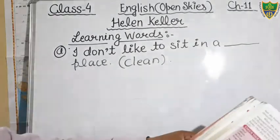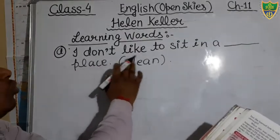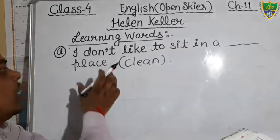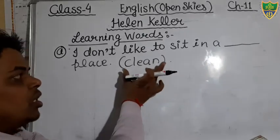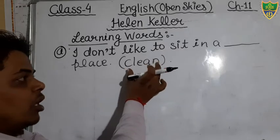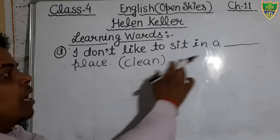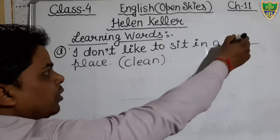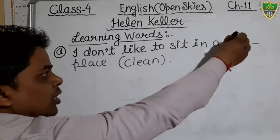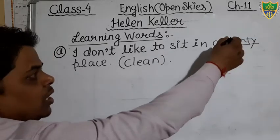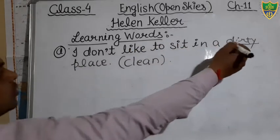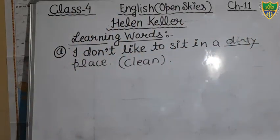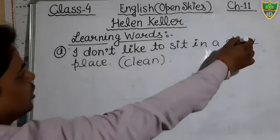For question number A: 'I don't like to sit in a blank place.' The word given in the bracket is 'clean.' The opposite of clean is 'dirty,' D-I-R-T-Y. So you will fill the word dirty: 'I don't like to sit in a dirty place.' You will fill the word dirty, D-I-R-T-Y.